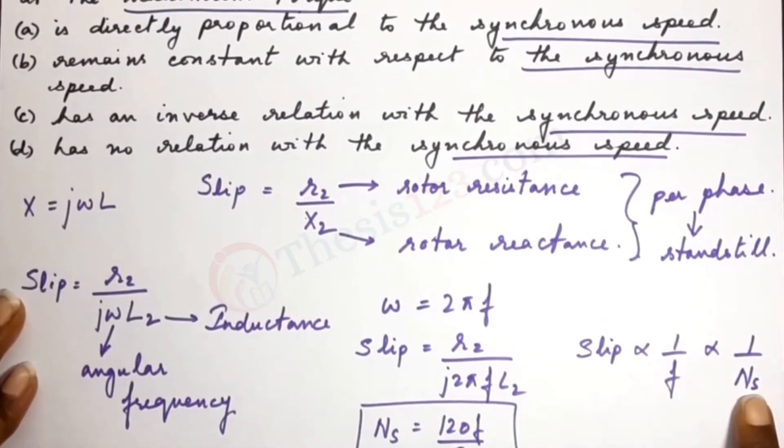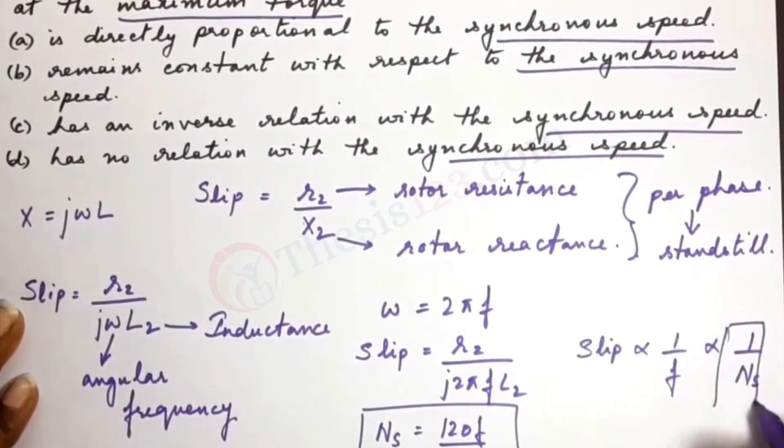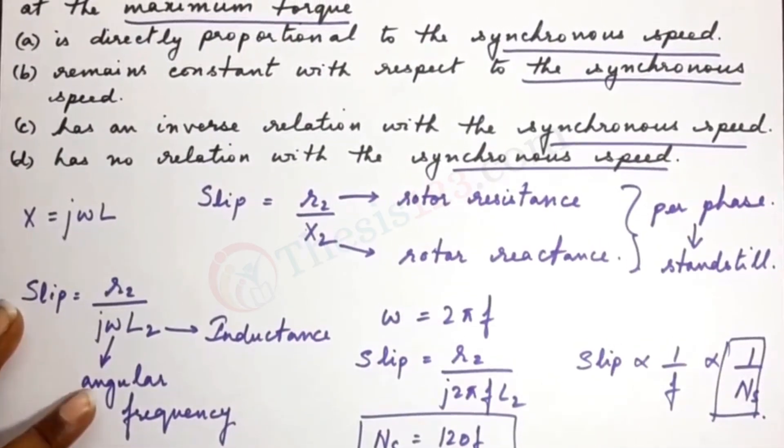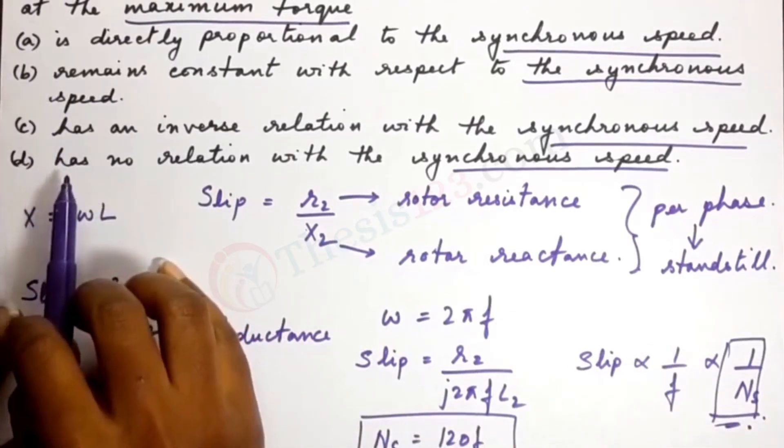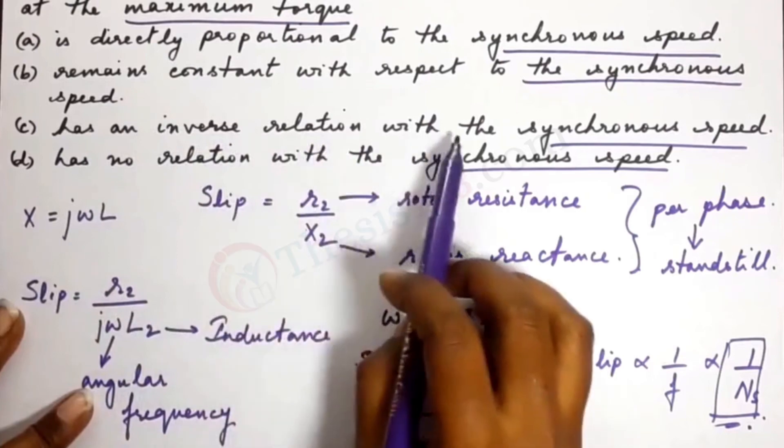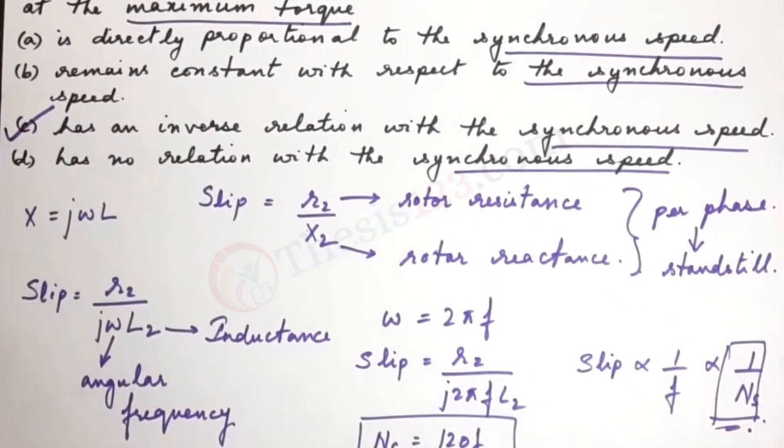This implies that slip is inversely proportional to the synchronous speed. This is the final answer. The right option is (c) has an inverse relation with the synchronous speed. I hope this has helped.